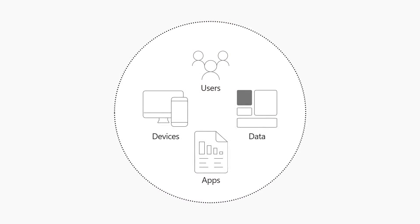There are primarily four different pillars to security: users, devices, apps, and data. Users bring identities, unique behaviors and usage patterns, and have varying levels of access needs depending on their role.